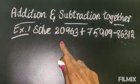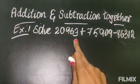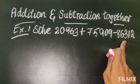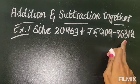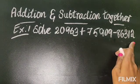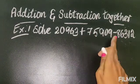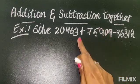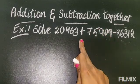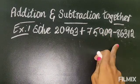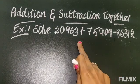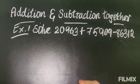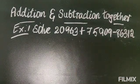Here there are three numbers: 20963 plus 75909 and minus 86312. So here addition is there and subtraction is also there. In this case first you will do the addition, then you will do the minus. So let's do the addition first and arrange the digits in order.